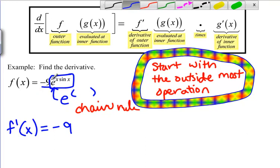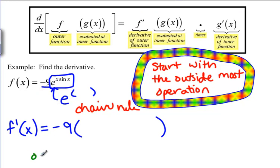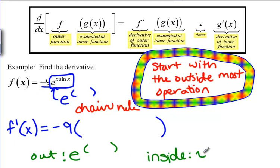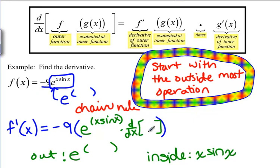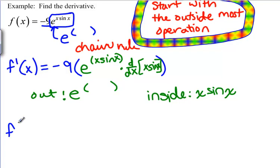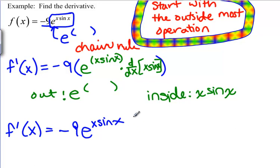How do you apply the chain rule to e to the x sine x? The outside function is e to the something; the inside is x sine x. So after our negative 9, we're going to put the derivative of e to the something, which is e to that something — so e to the x sine x, since that's our inside function. And then we need to follow that with the derivative of x sine x. For right now I just wrote down that I need to take that derivative.